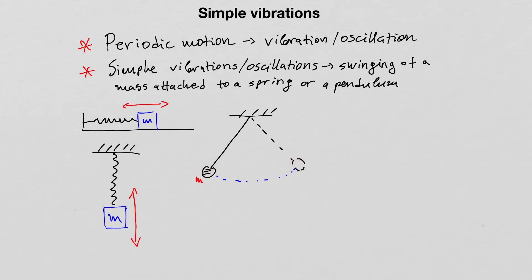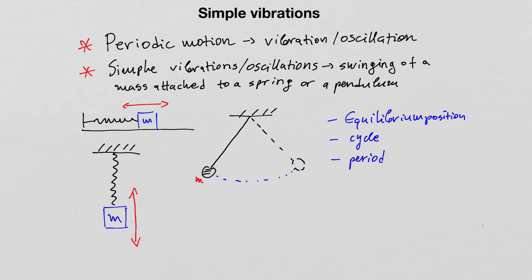Each of those oscillating systems can be characterized with several parameters: equilibrium position, cycle, period, frequency, and amplitude.